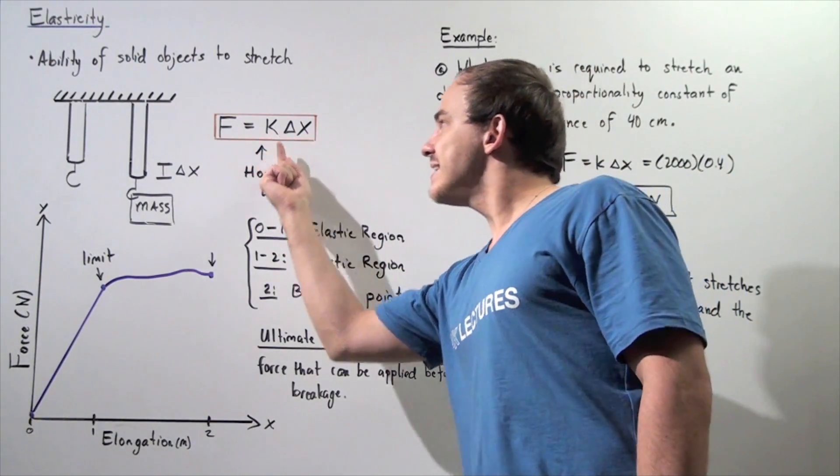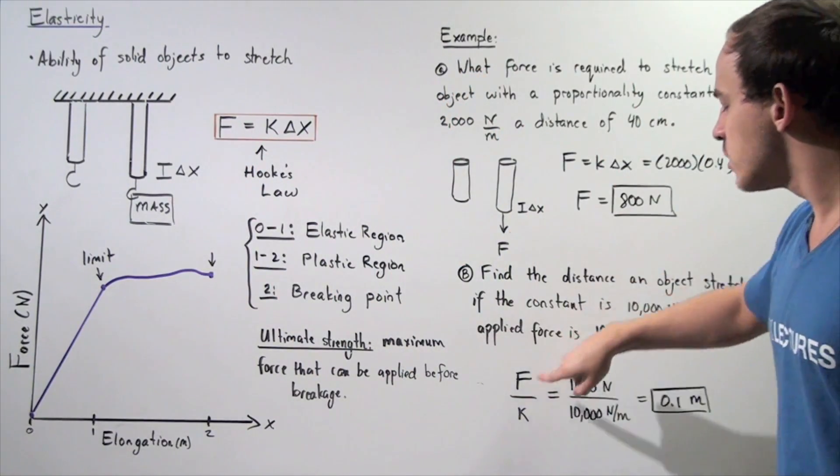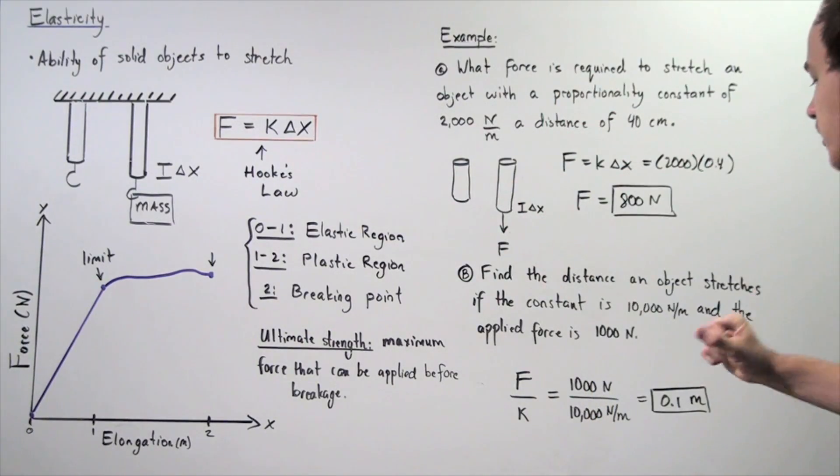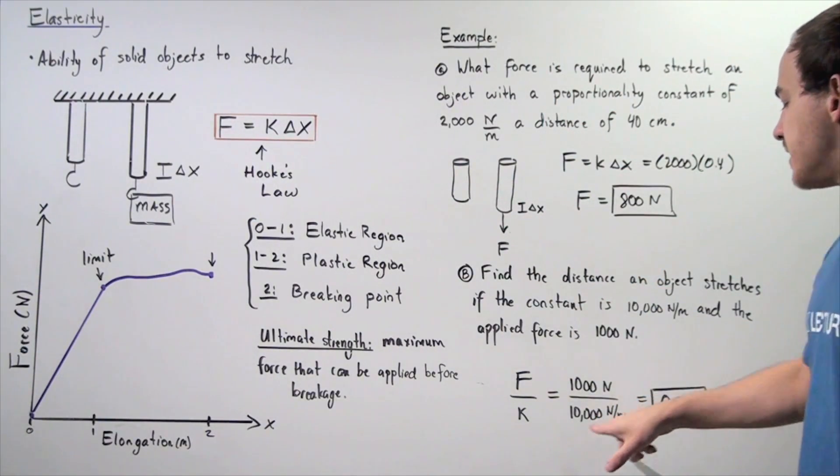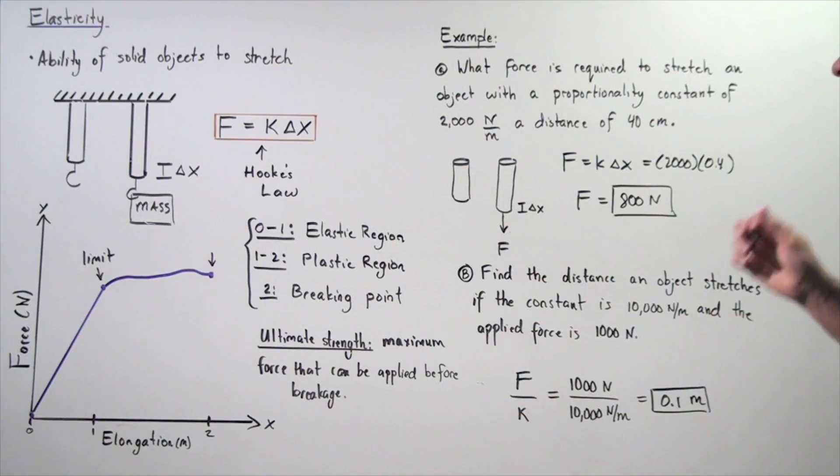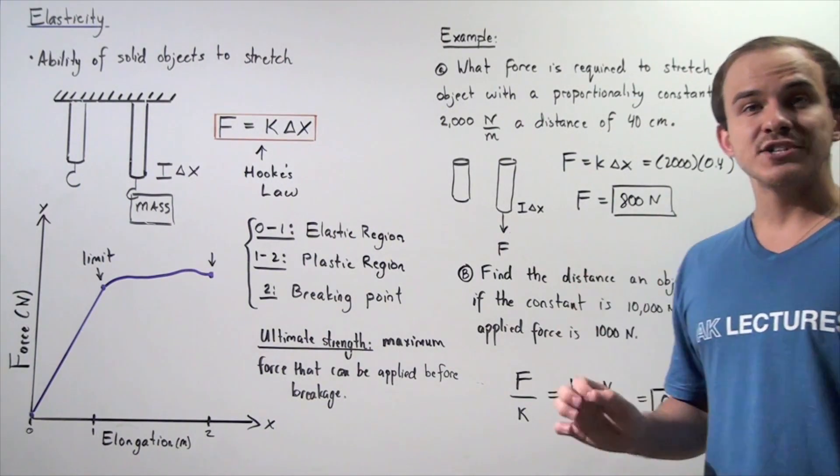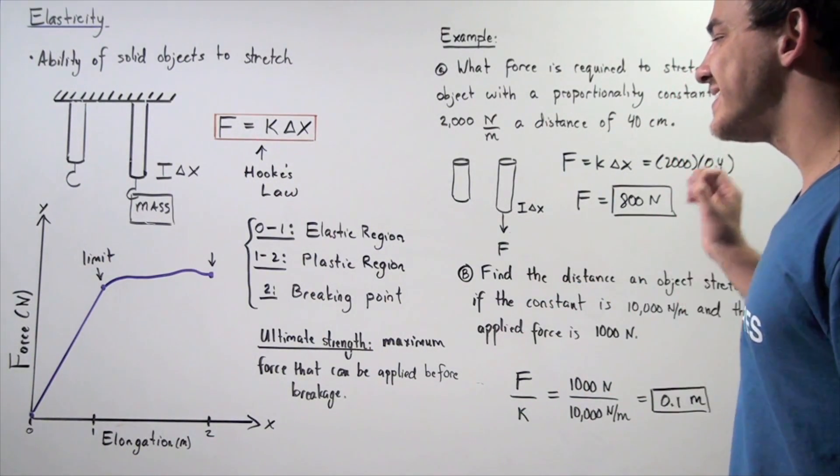So, we basically bring the k to this side, and we have force divided by k is equal to change in x, what we're looking for. So, 1,000 divided by 10,000 gives us 0.1 meter, or equivalently, 10 centimeters. So, in part B, our object will stretch a distance of 10 centimeters.